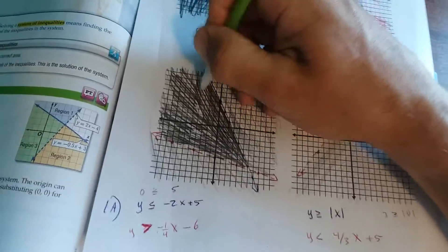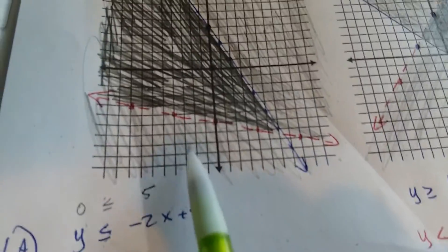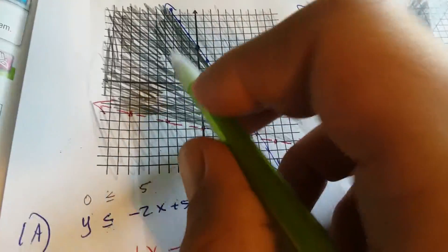So this dark region here is the solution that I'm looking for. We got lightly shaded region, lightly shaded region, and then our dark region right here.